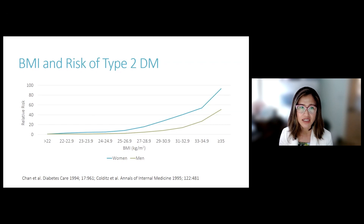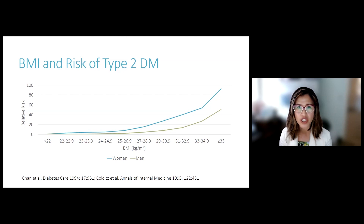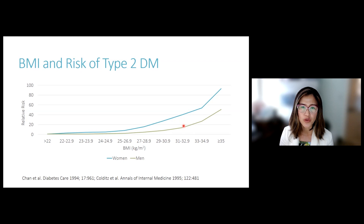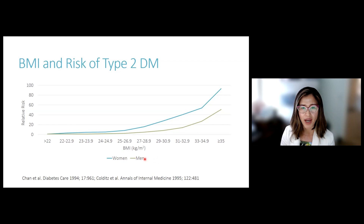Type 2 diabetes is the most common type of diabetes — over 90% of individuals with diabetes have type 2. It has a strong association with BMI and excess weight gain. Looking at data from cohort studies in women and men followed for years: on the X axis is starting BMI, and the higher your starting BMI, the greater your future risk for type 2 diabetes. The risk goes up as BMI increases.